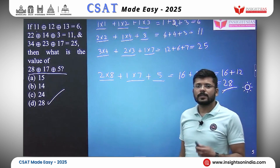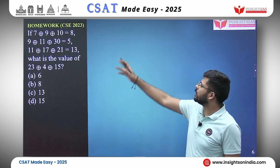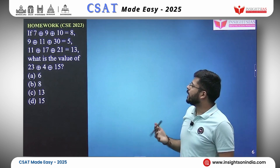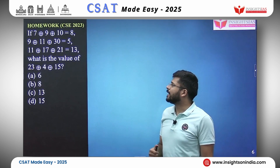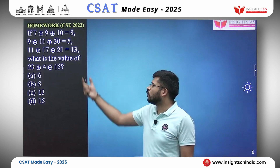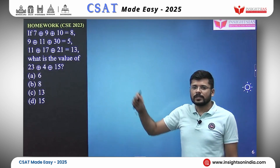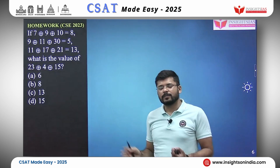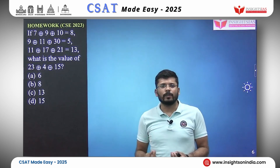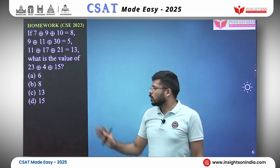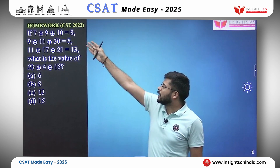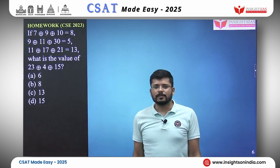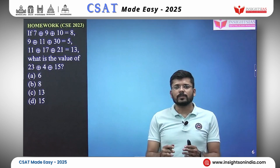Based on the concepts you have learned, do answer this question — it was asked in the 2023 paper and is based on one of the logics from the previous problems. 7, 9, and 10 give you 8; 9, 11, 17, and 21 give you 13. What will 23, 4, and 15 give you? Do some trial-and-error; the logic will not be very complicated — some addition or multiplication. Leave your answers in the comments and we will discuss in the next class.